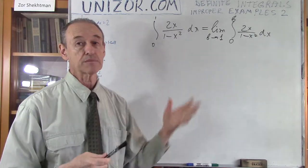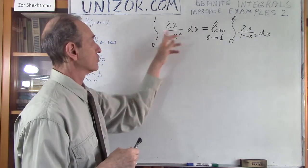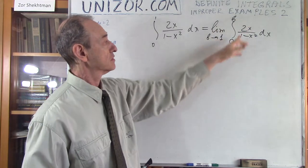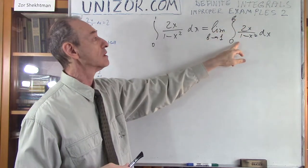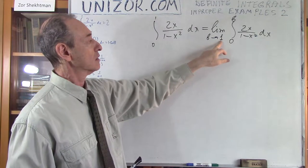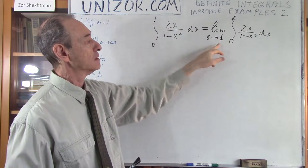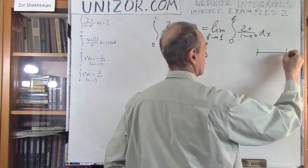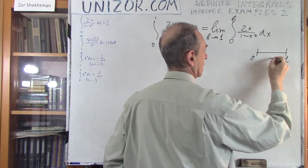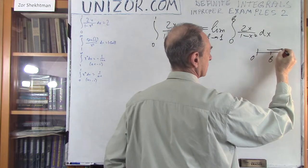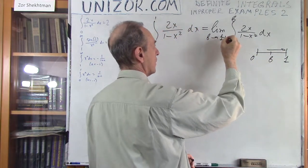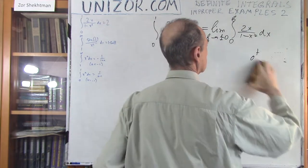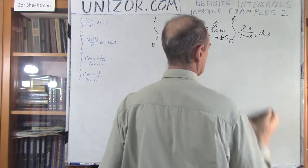We have converted it into a limit integral from 0 to b, where b approaches 1 from the left. Sometimes you write 1 minus 0, which means the same thing — approaching from the left. On this particular segment the integral is proper, so let's try to find it.